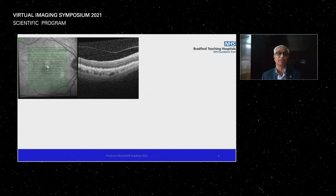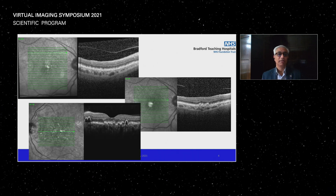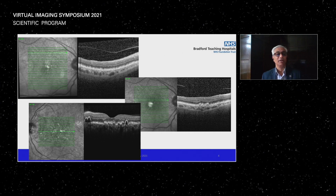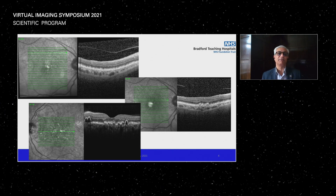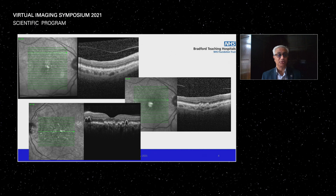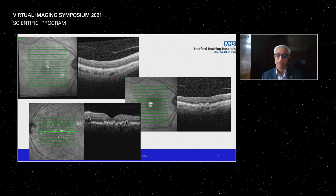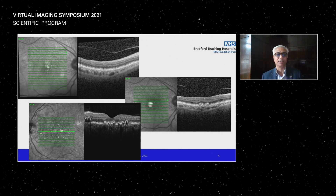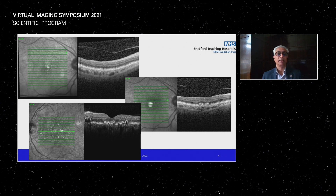Reticular drusen, soft drusen, and more dramatic drusen presentations each carry different significance. Reticular drusen are associated with both geographic atrophy and neovascular macular degeneration. Soft drusen can coalesce and progress toward wet macular degeneration, and the resulting atrophy can also be predicted based on drusen structure.